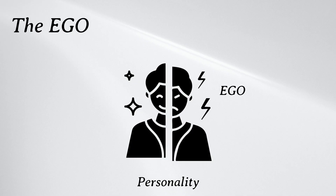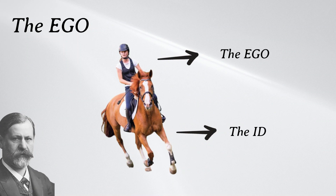The ego operates based on the reality principle, which strives to satisfy the ID's desires in realistic and socially appropriate ways. The reality principle weighs the costs and benefits of an action before deciding to act upon or abandon impulses. Freud compared the ID to a horse and the ego to the horse's rider. The horse provides power and motion, while the rider provides direction and guidance. Without its rider, the horse would wander wherever it wished and do whatever it pleased. The rider gives the horse directions and commands to get it where it wants it to go.